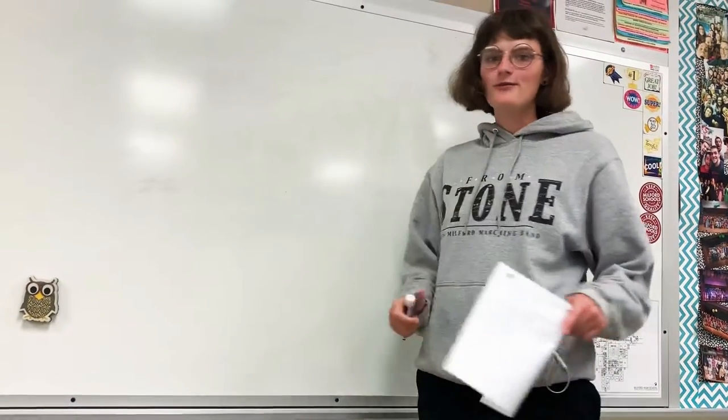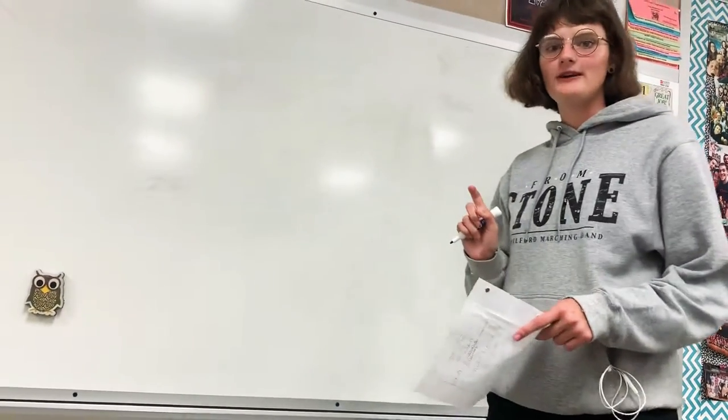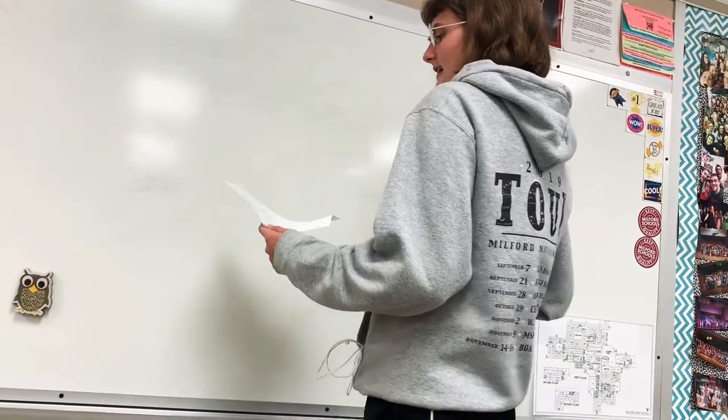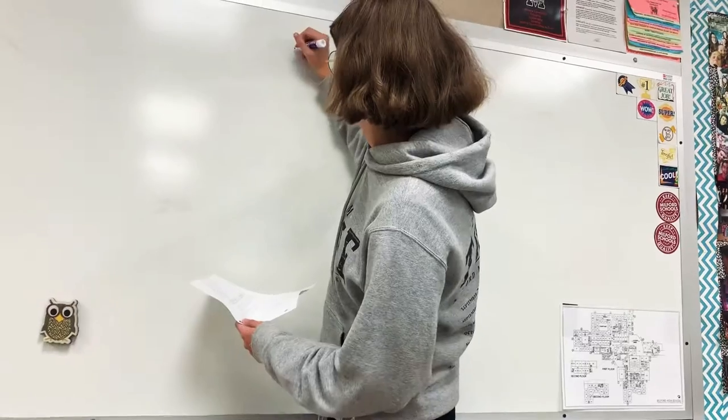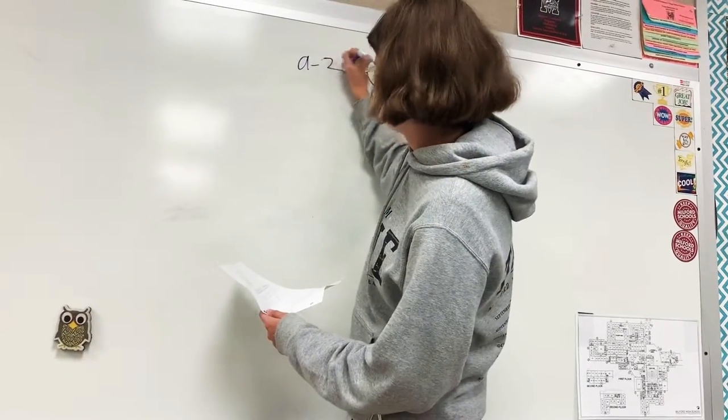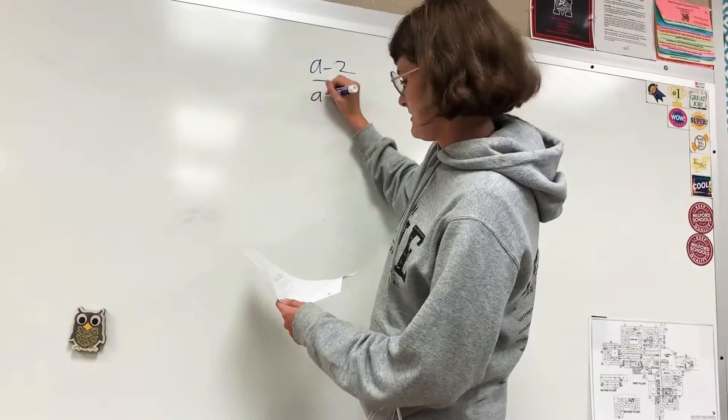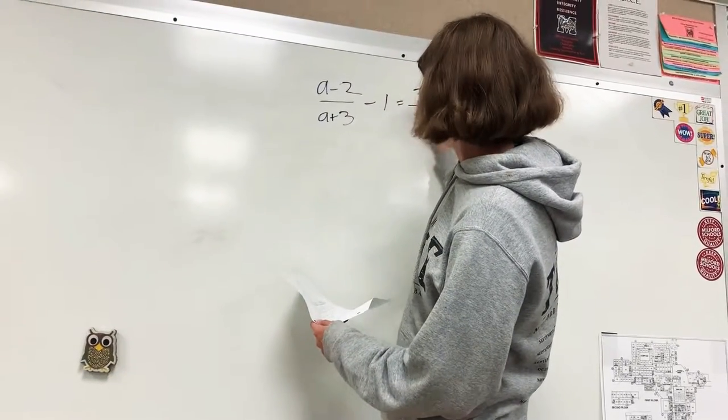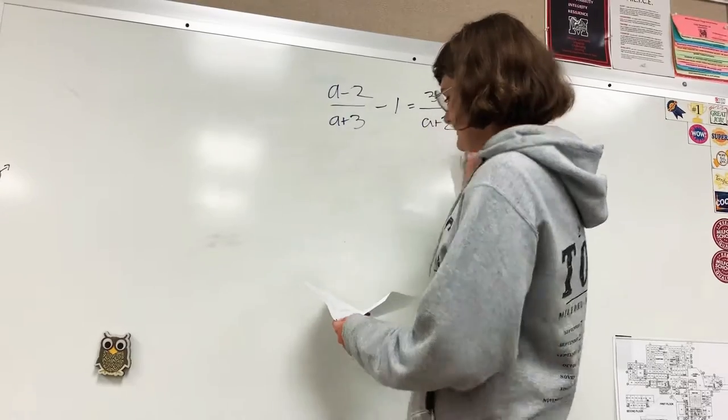Okay, so we're going to solve the first problem of section 3 under the rational section. The problem is (a-2)/(a+3) - 1 = 3/(a+2).